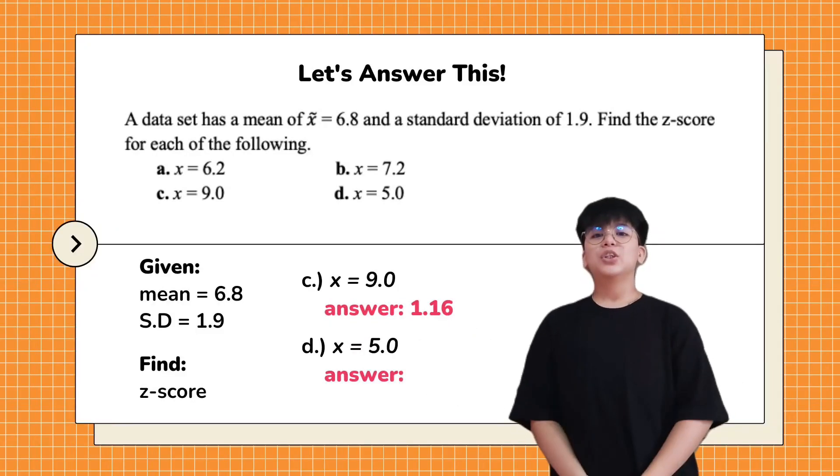Time's up! What do you think the answer is? The answer for letter D is negative 0.95.